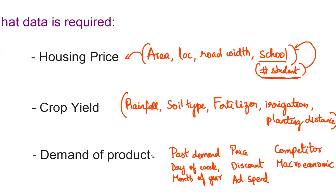To predict the demand of a product into the future, you need to know the past demand pattern of that product. Likewise, you'd consider what day of the week it is, what month of the year, the price of the product, discount, ad spend, competitor discounts, and competitor pricing. Macroeconomic variables like population, average age of the population, and income level also fall under helpful variables. The core idea is to go after variables or features that might be helpful in predicting the variable of interest.